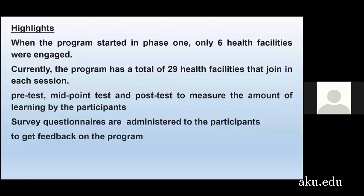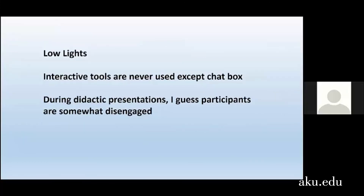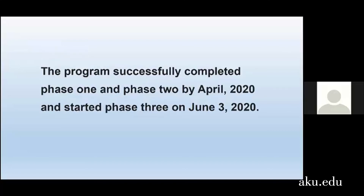What are the highlights? When the program started we had only six sites; currently we have 30. There is a pre-test, midpoint test, and post-test to measure learning progress, along with survey questionnaires and a formal examination questionnaire scored online. What are the lowlights? Interactive tools are never used except for the chat box. We have Mentimeter, Padlet, whiteboard, and many interactive tools, but they are hardly ever used because the time is very short. More than an hour, the technologists don't stick around, and many participants join through a TV screen — about 10 people on one screen — so interactive tools can't be used unless everyone uses their own smartphone.